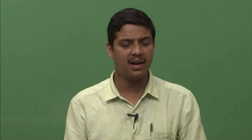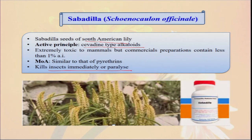One is sabadilla — it is also from the seed of the South American lily and has the active principle of cevadine-type alkaloids. It is somewhat oxidative, but commercially less than one percent, and it kills insects immediately or paralyzes them. But we have to take care of this type of thing, because sometimes it is also toxic to mammals. So always you have to take different types of precautions whenever using this type of different botanicals or any leaf extract or other extract in your organic farm.